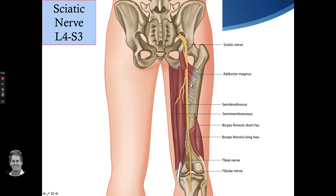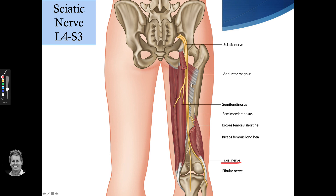The sciatic nerve, from L4 to S3, supplies half the adductor magnus (the obturator supplying the other half), as well as semimembranosus, semitendinosus, and biceps femoris. As it comes down to the posterior part of the knee, it splits into the tibial nerve continuing down and the common fibular nerve, which also splits.